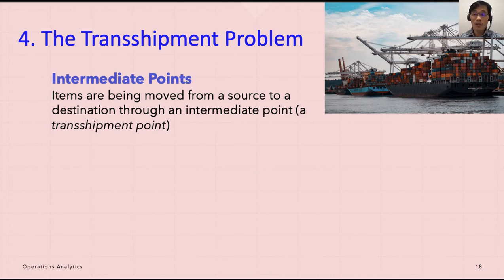For example, a company might be manufacturing a product at several factories to be shipped to a set of regional distribution centers. From these centers, the items are shipped to retail outlets that are the final destinations.